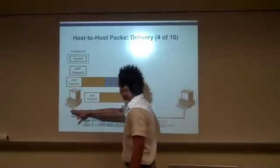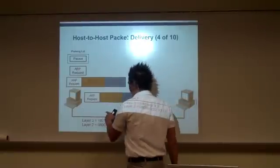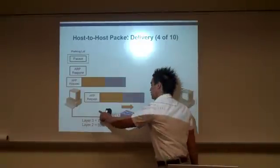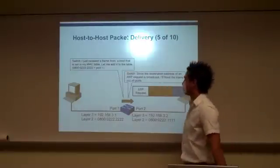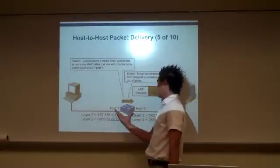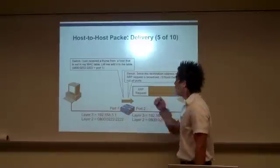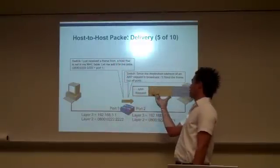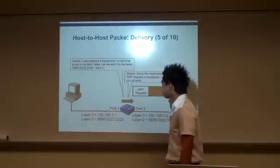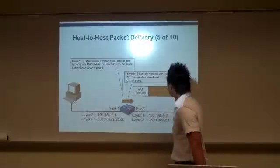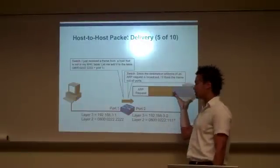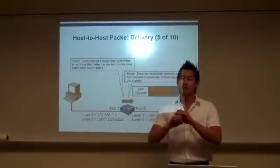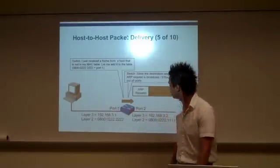Once I send that through the physical media, it goes down as layer 1 — just ones and zeros as bits. It will be received by the switch. The first thing that happens when it is received by this layer 2 device on port 1 is that the switch maps the source MAC address of this ARP request to port 1. Since the destination MAC is a broadcast, by default a layer 2 device will broadcast that frame out all active ports except the port it originated from.